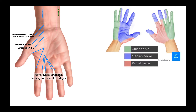There are also the palmar digital branches. These are branches that flank digits one through three on either side and the lateral half of digit four, providing sensory information on the palmar aspects for the lateral three and a half digits. That includes both sides of the thumb, both sides of the second digit, both sides of the third digit, and then the lateral half of the fourth digit — all on the palmar aspect.